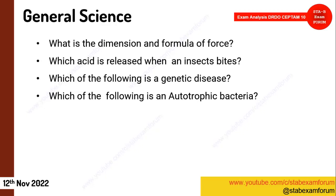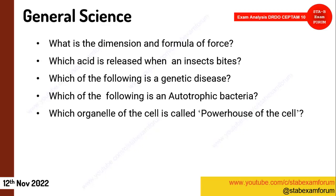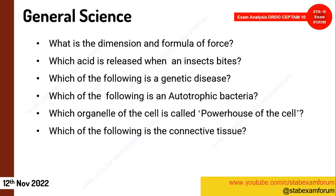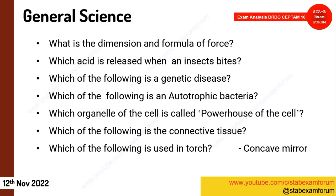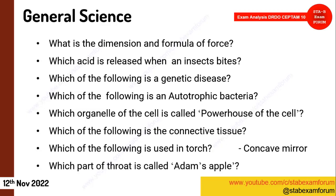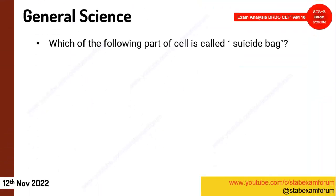Autotrophic bacteria — cyanobacteria is likely the answer. Which organelle of the cell is called the powerhouse? It's mitochondria. Which of the following is connective tissue? Blood was the correct answer. In optics, which is used in a torch? It's a concave mirror, not a lens. Which part of the throat is called Adam's apple — answered from options. Which part of the cell is called the suicide bag? It's the lysosome.